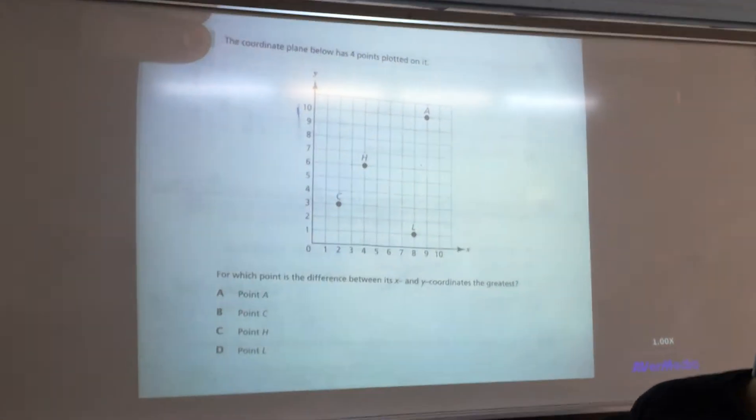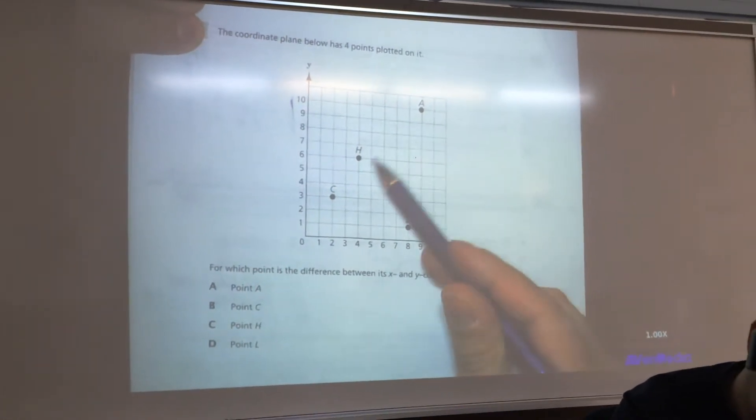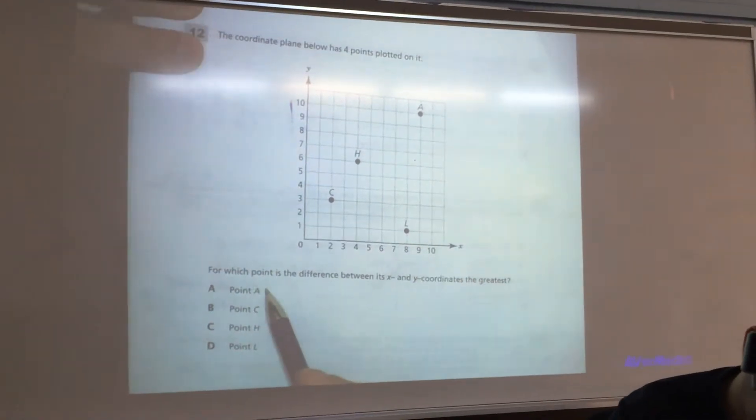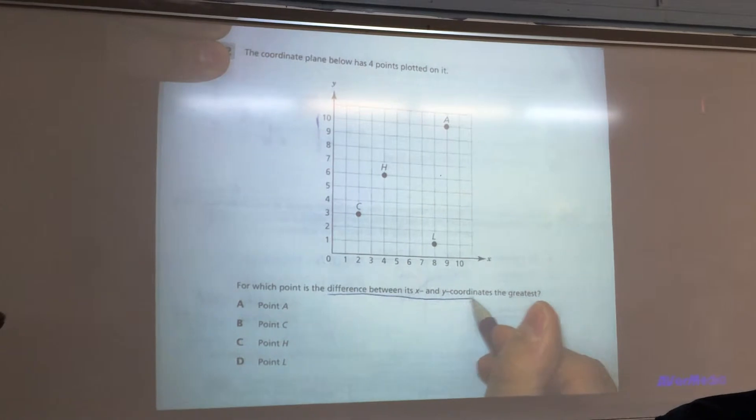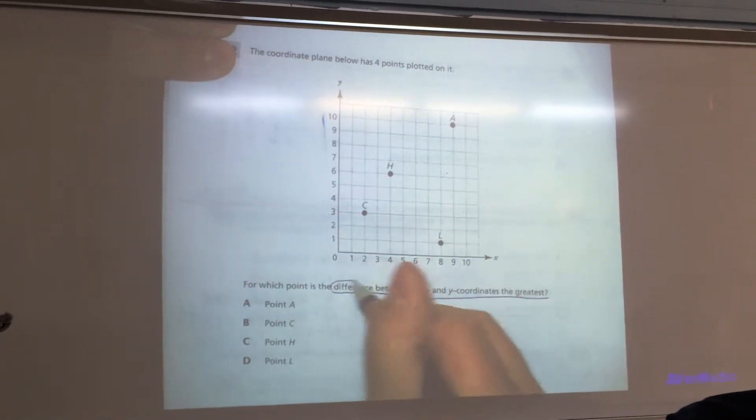The coordinate plane below has four points plotted on it, you can see them right here. For which point is the difference between its x and y coordinates the greatest?